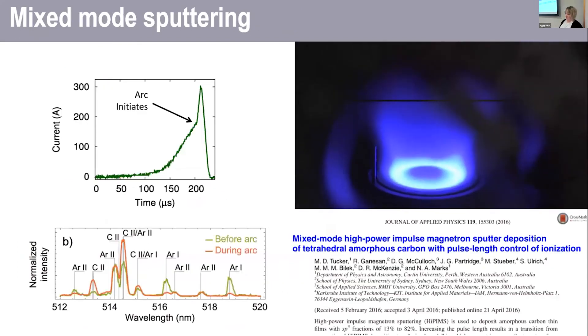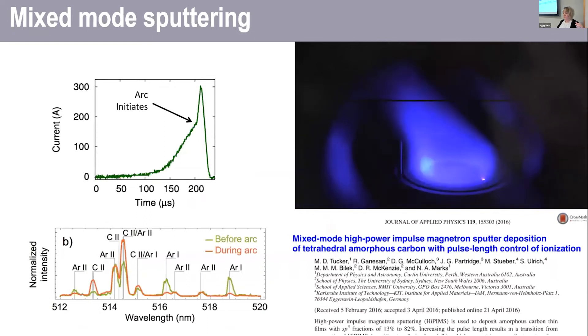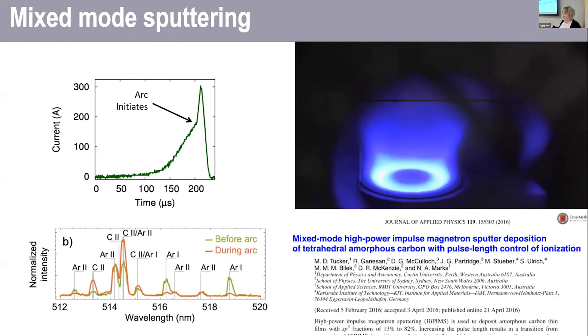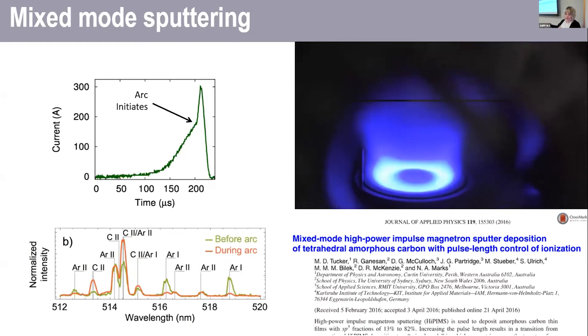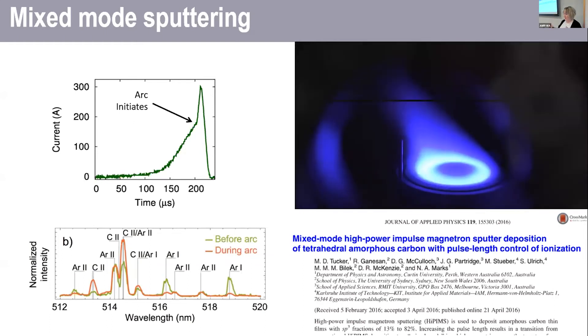Our previous work looked at something you'd call mixed mode sputtering. So here we were interested in carbon materials and as they are hard to ionize, even with a HiPIMS system, we needed to go a little bit further, which is where we intentionally caused arcing in our system in order to increase the ionization fraction.